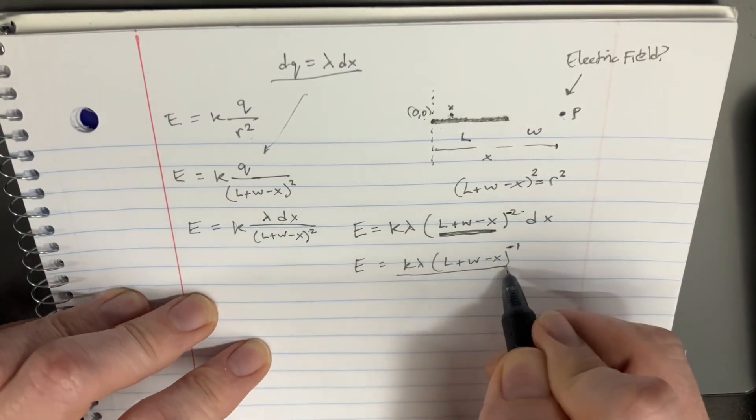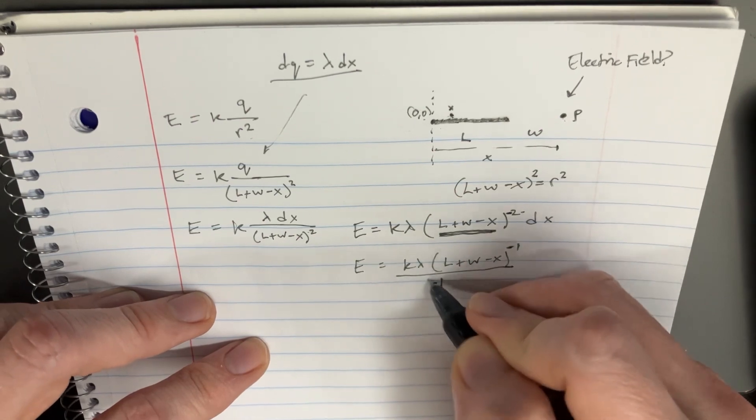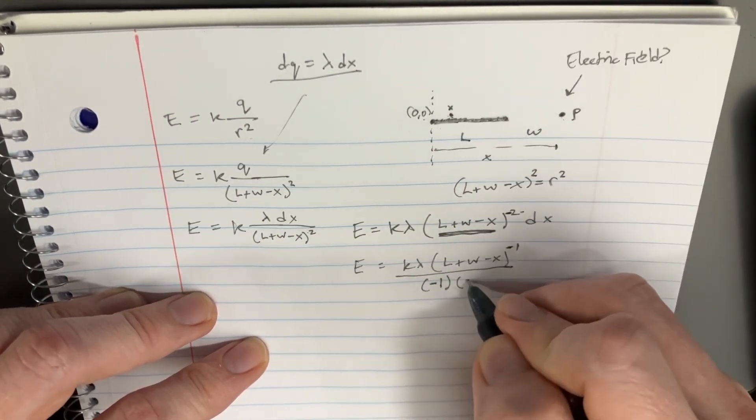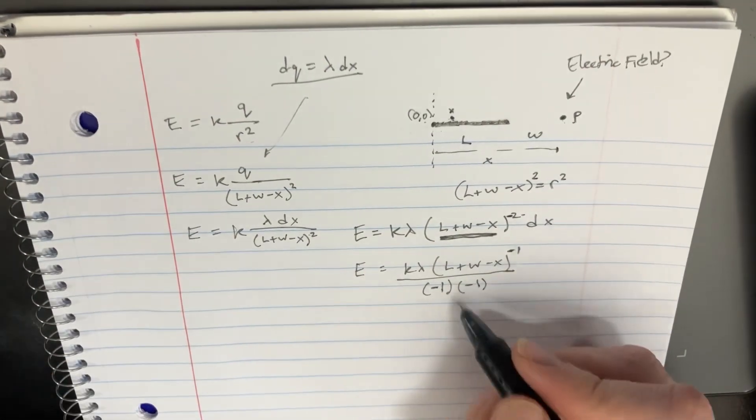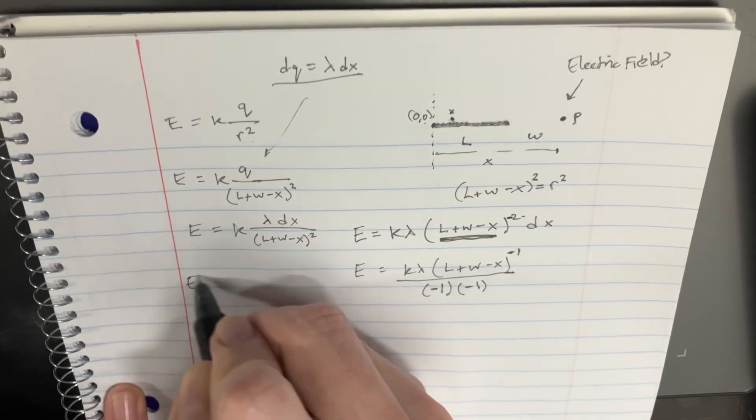Then you can go ahead and divide it by, you know, negative 1, right? But then you're also going to divide it by the derivative of what's on the inside, which is negative 1. Those are just going to cancel out, and you're just going to get this stuff on the right, which is E equals K.